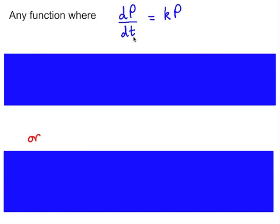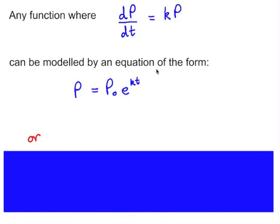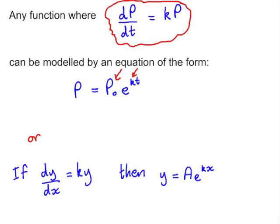Looking at this in reverse, if we know that the derivative of p with respect to t is a scalar multiple of p, then p can be modelled by an equation of the form p₀e to the kt. So p₀ is the initial value, k is that scalar. So we know, if we have a derivative that looks like this, that anti-differentiating will give us an exponential function. Or in terms of y and x, if dy/dx is ky, then y is of the form ae to the kx.